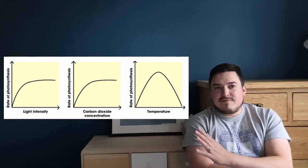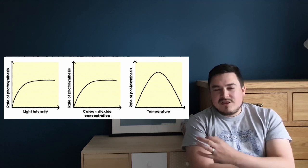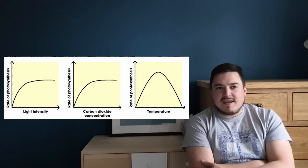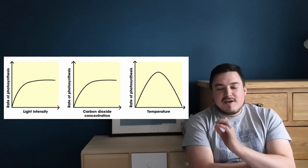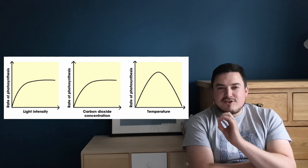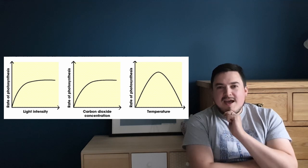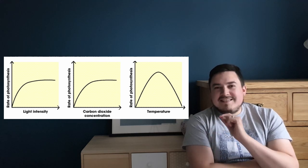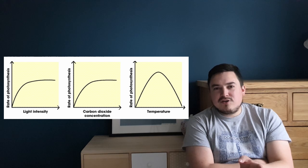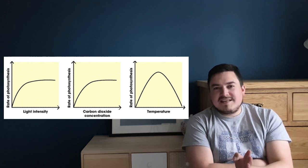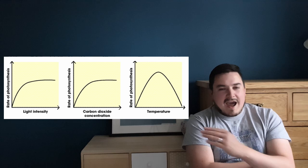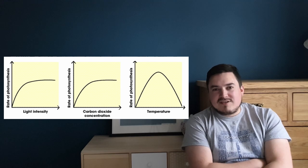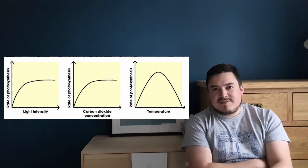After that, the rate of reaction drops very quickly. There is a specific word that comes up you need to be able to use to describe what's happening here. Because enzymes are what are required to allow this reaction to happen, if those enzymes get too hot they denature - their shape changes and they no longer do the job they need to. If they denature, none of the enzymes will be able to do their job and none of the photosynthesis will be able to happen, which is why we see the rate of reaction completely drop off.